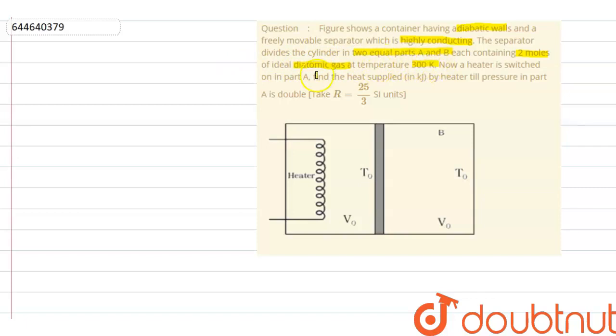Now a heater is switched on in part A. So this is part A and this is B and this is the heater. Find the heat supplied by the heater in kilojoule till pressure in part A is double.